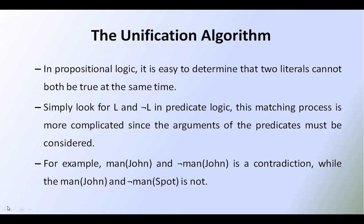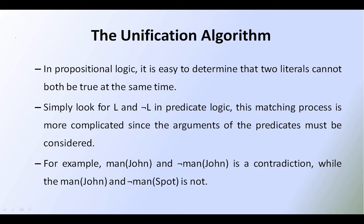In proposition logic, we are having two literals and it is very easy to determine that two literals cannot both be true at the same time. In proposition logic, for example, we are having two kinds of literals: one is P of X comma Y, and another one is Q of X comma Y. These two literals both cannot be true at the same time.